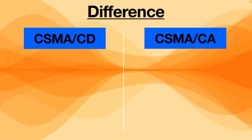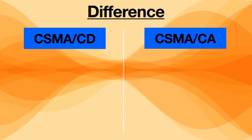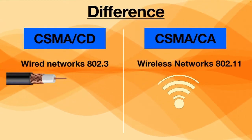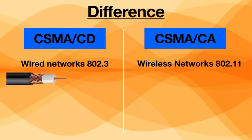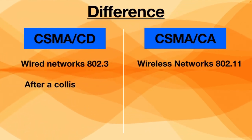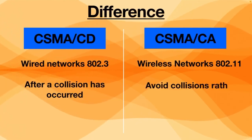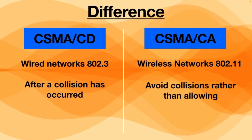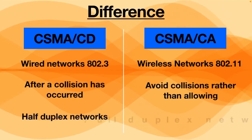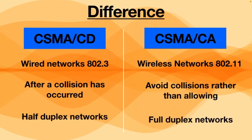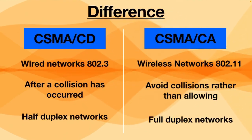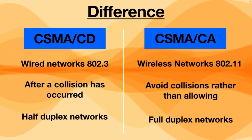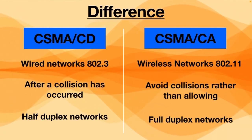In a nutshell, the main difference between CSMA/CD and CSMA/CA is that CSMA/CD is used in wired networks whereas CSMA/CA is used in wireless networks. Another major difference is that CSMA/CD deals with transmission after a collision has occurred, while CSMA/CA avoids collisions rather than allowing them to occur and does not deal with packet recovery after a collision. CSMA/CD is used in half-duplex networks and CSMA/CA in full-duplex networks. Thanks for your time — please hit the subscribe button and see you in the next video.